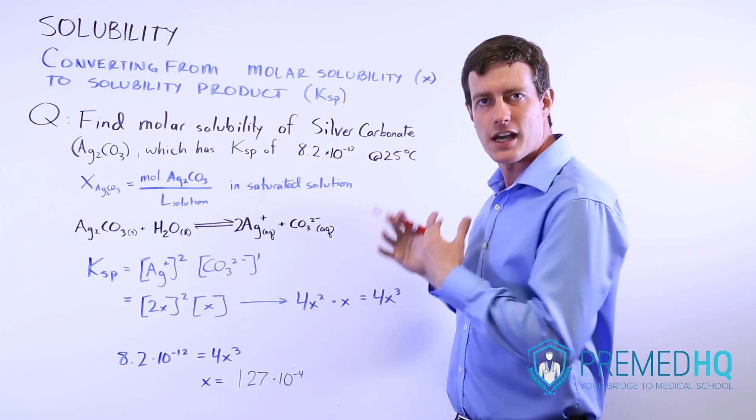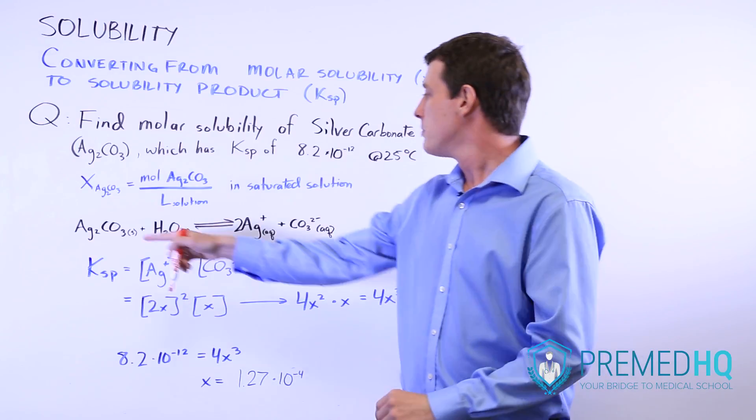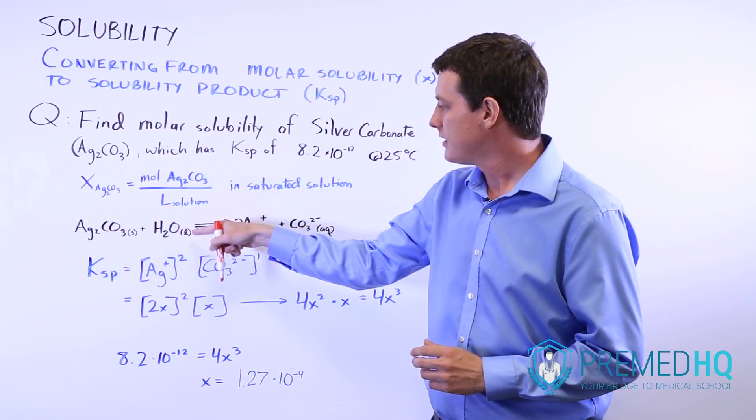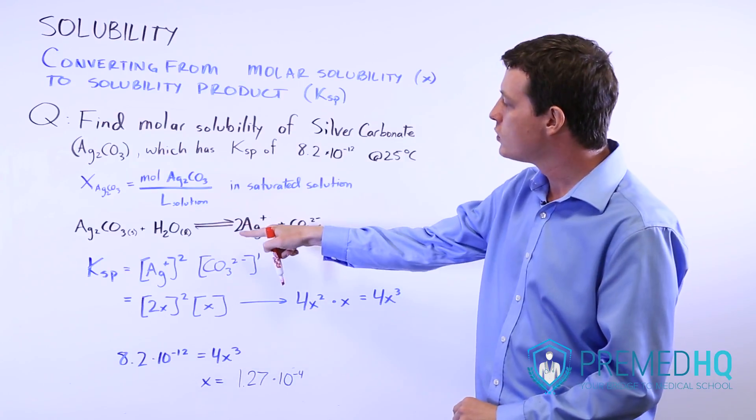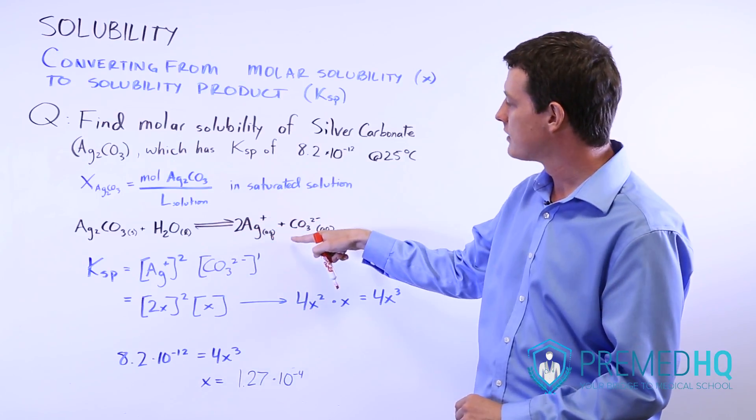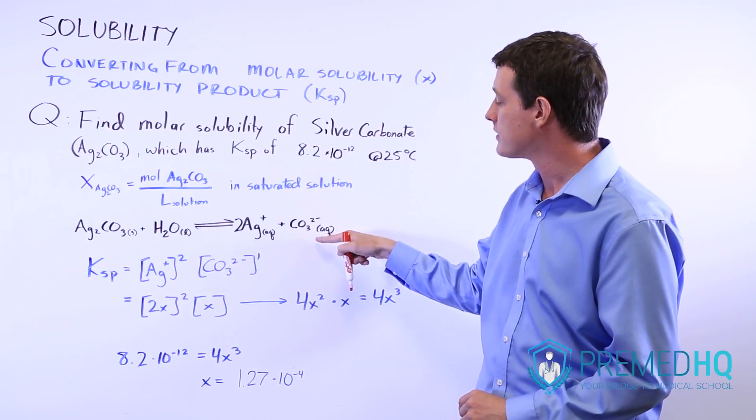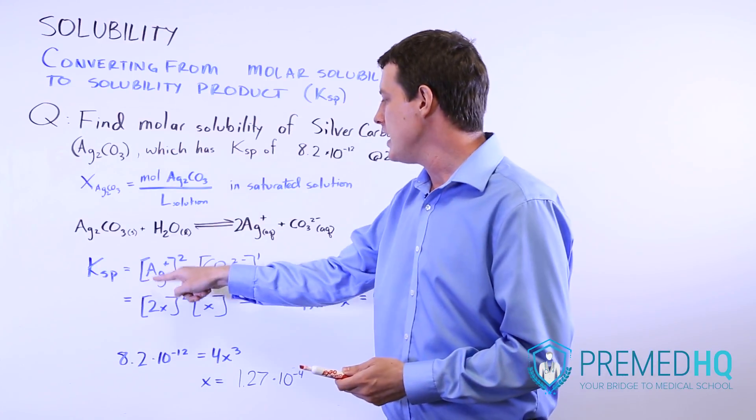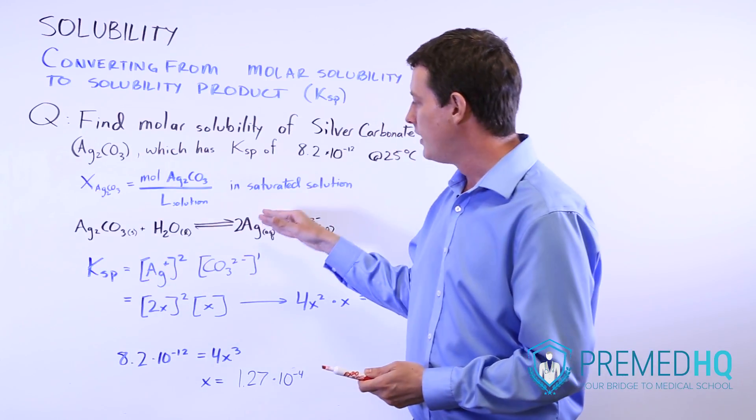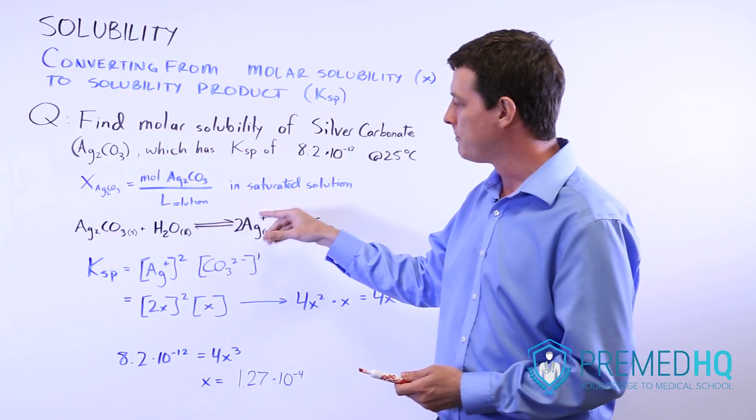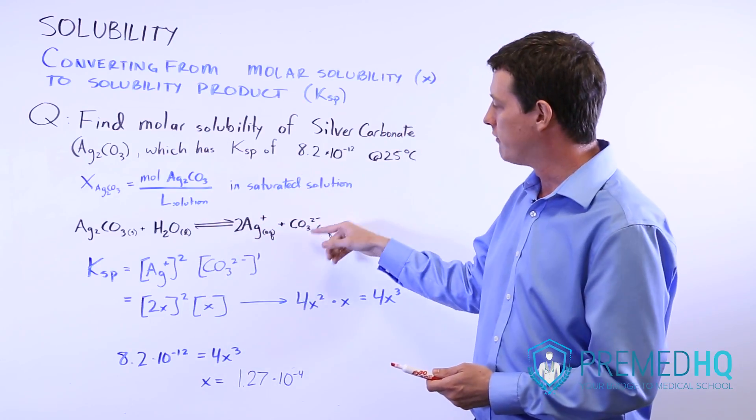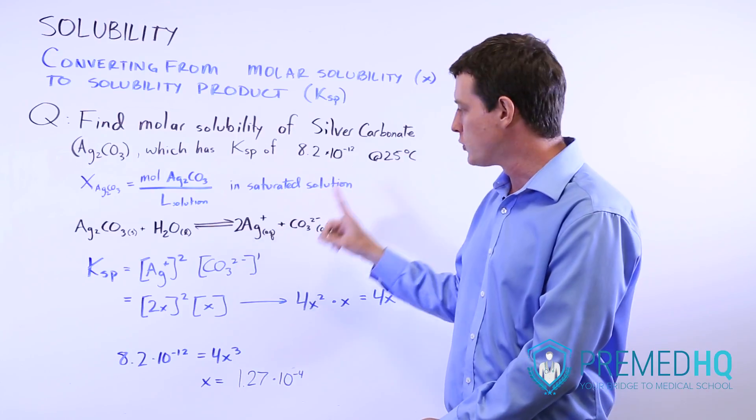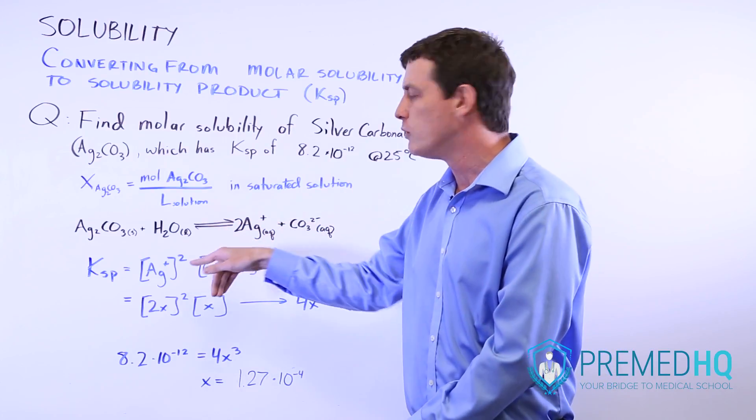Remember that the dissociation of silver carbonate is Ag2CO3 solid plus H2O liquid turns into two Ag+ ions aqueous and a carbonate ion CO3^2- which is also aqueous. We represent the KSP of that as [Ag+]^2, the concentration of dissolved silver ions at equilibrium, times the concentration of carbonate ions at equilibrium. This one is raised to the first power because the stoichiometry is one of these versus two for the silver ions.